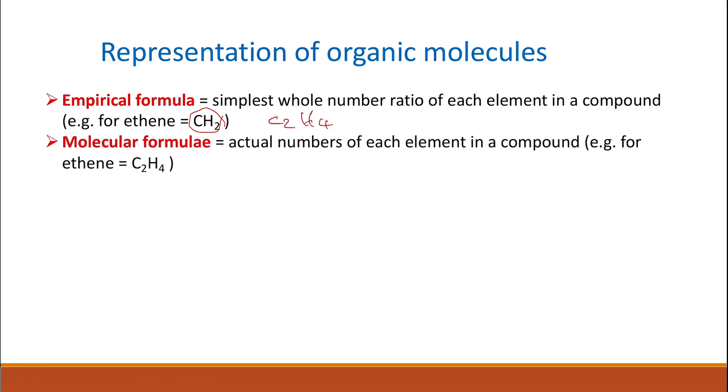The second formula is the molecular formula, and we know that molecular formula gives us the actual number of different elements within a compound. So for ethene, it has two carbon, four hydrogen. So molecular formula is C2H4.